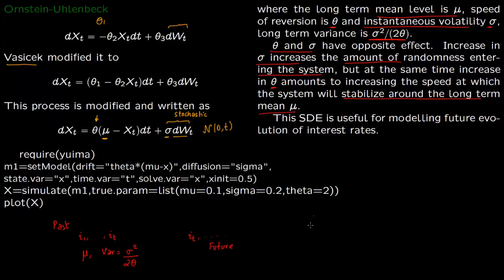So say you have some long term mean of interest rate. So say this is the long term mean of interest rate. This is mu. So what is sigma going to do? Sigma is going to if you start simulating it is trying to take your interest rate in directions which are away from the mean. Increase the randomness.